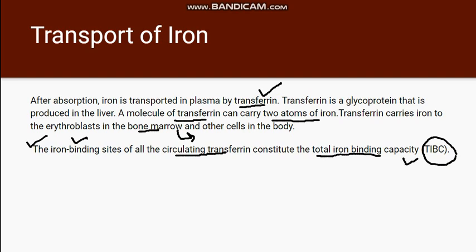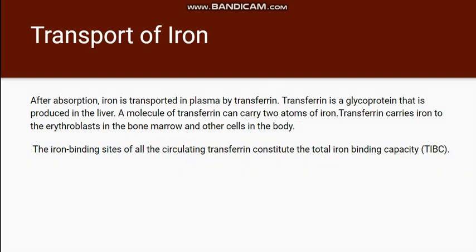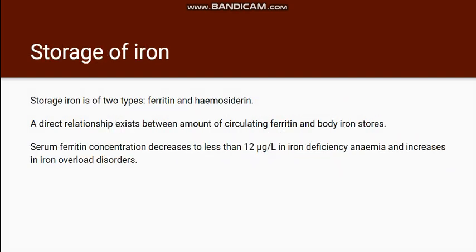In case of iron deficiency anemia, the iron binding sites are available for binding of iron but the iron is less in the body, so TIBC increases in iron deficiency anemia. Iron is stored in the form of two parts: ferritin and hemosiderin. Whenever iron deficiency anemia occurs, firstly the iron stores are depleted — depletion of iron stores is the first step — so the ferritin level will be low in iron deficiency anemia.